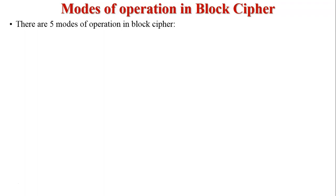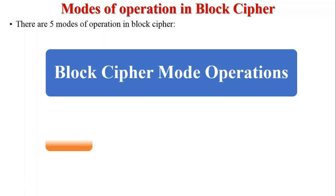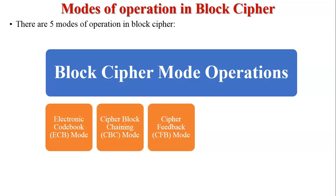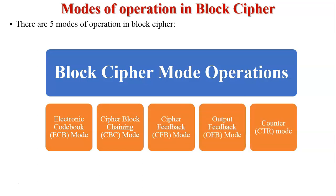There are 5 modes of operation in block cipher: first, ECB electronic codebook mode; cipher block chaining mode; cipher feedback mode; output feedback mode; and counter mode. Today we are going to discuss cipher feedback mode, CFB mode.